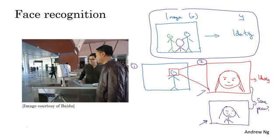So why is it that the two-step approach works better? There are actually two reasons for that. One is that each of the two problems you're solving is actually much simpler. But second is that you have a lot of data for each of the two subtasks. In particular, there is a lot of data you can obtain for face detection for task one, where the task is to look at an image and figure out where is the person's face in the image. So there is a lot of labeled data X comma Y where X is a picture and Y shows the position of the person's face. So you could build a neural network to do task one quite well. And then separately, there's a lot of data for task two as well.